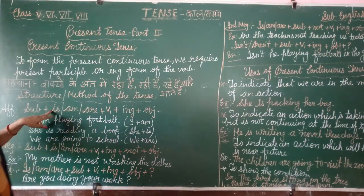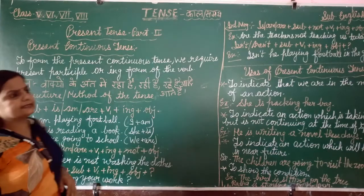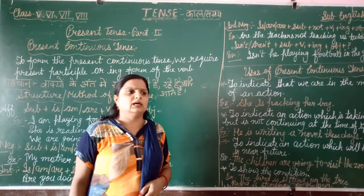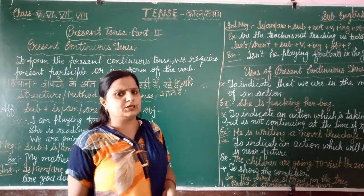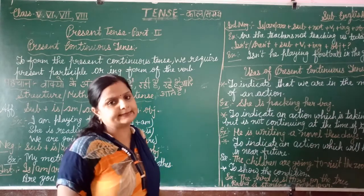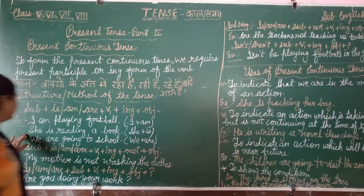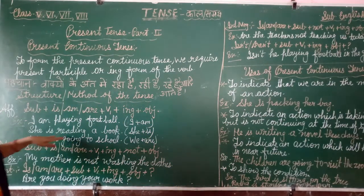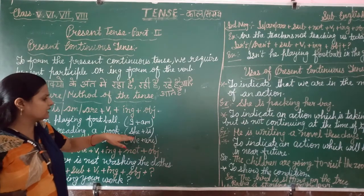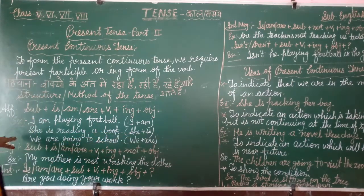The usage of is: we use it with singular forms such as she, he, any name, it, etc. For example: she is reading the book. So we use she plus is.